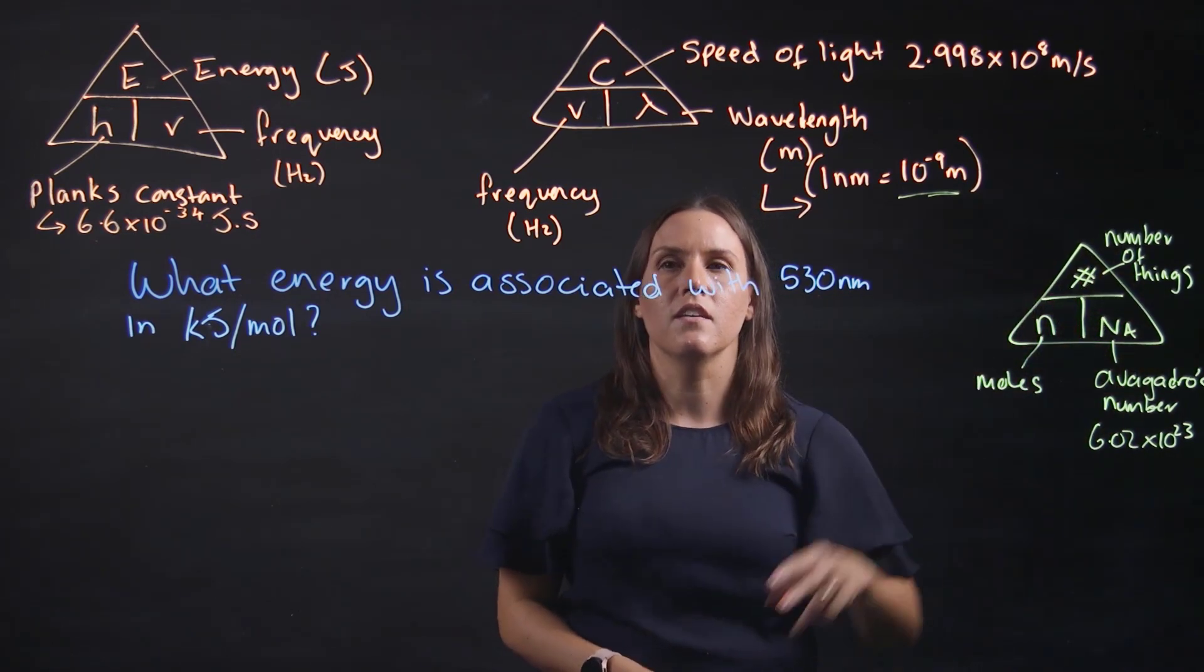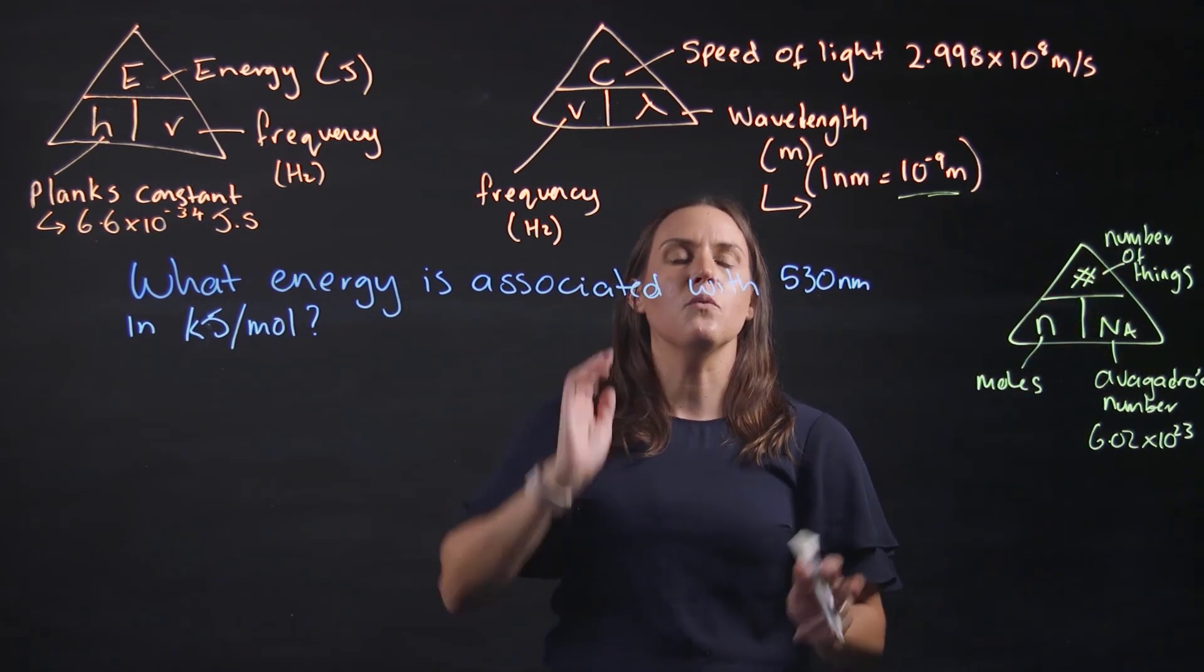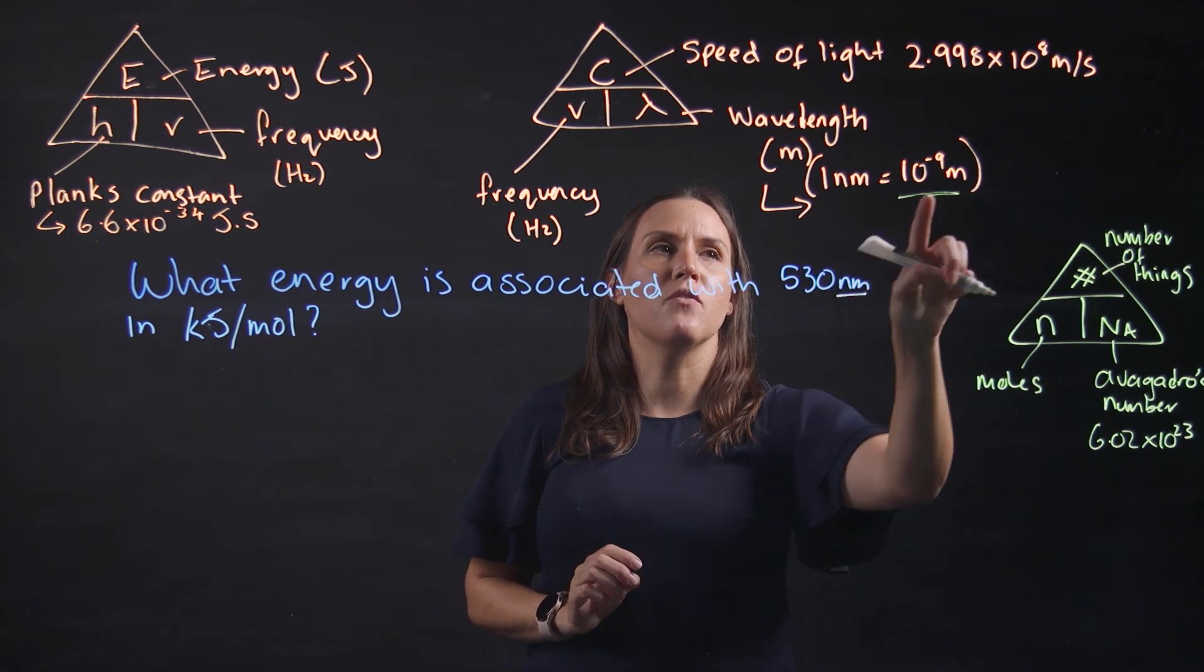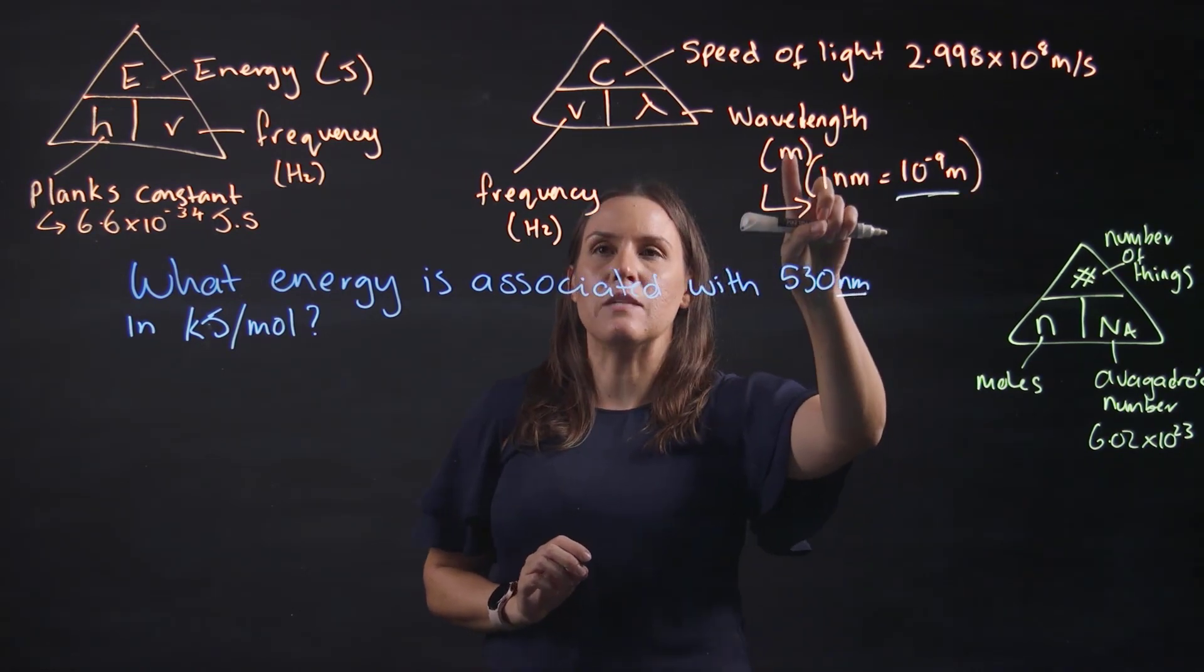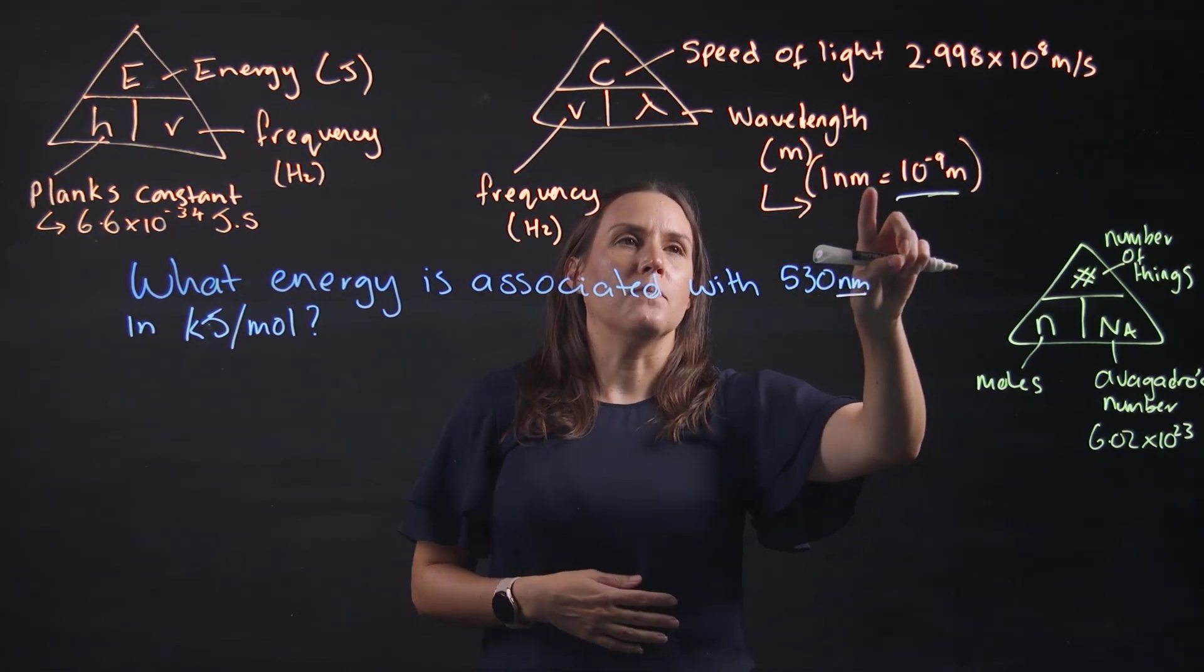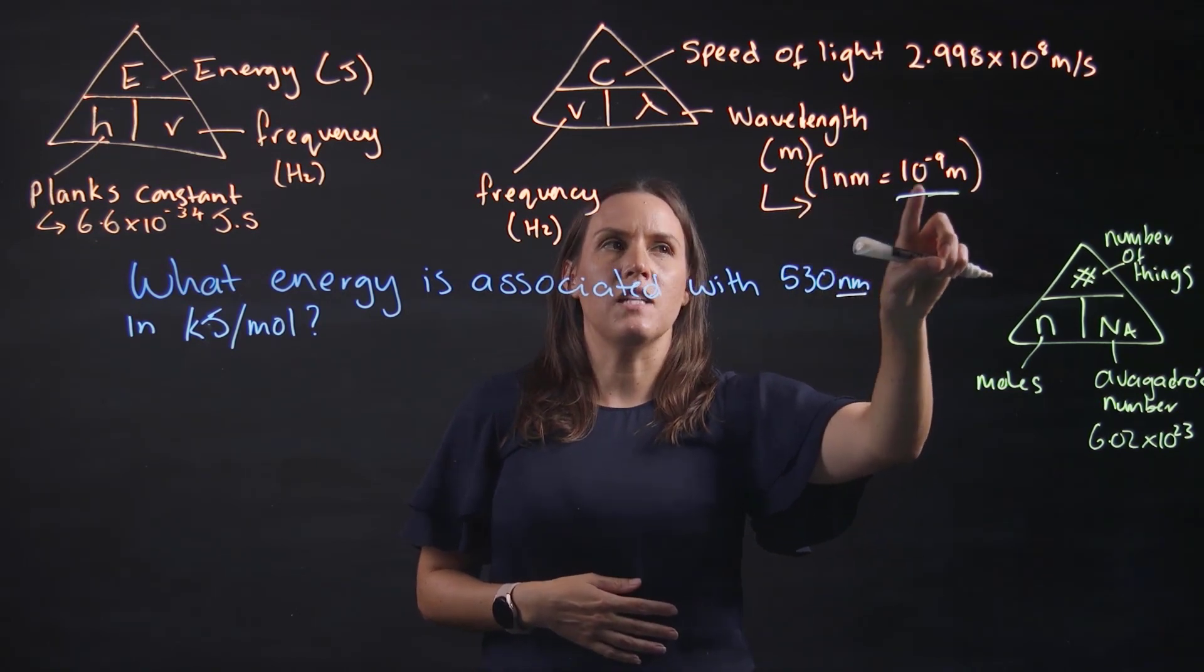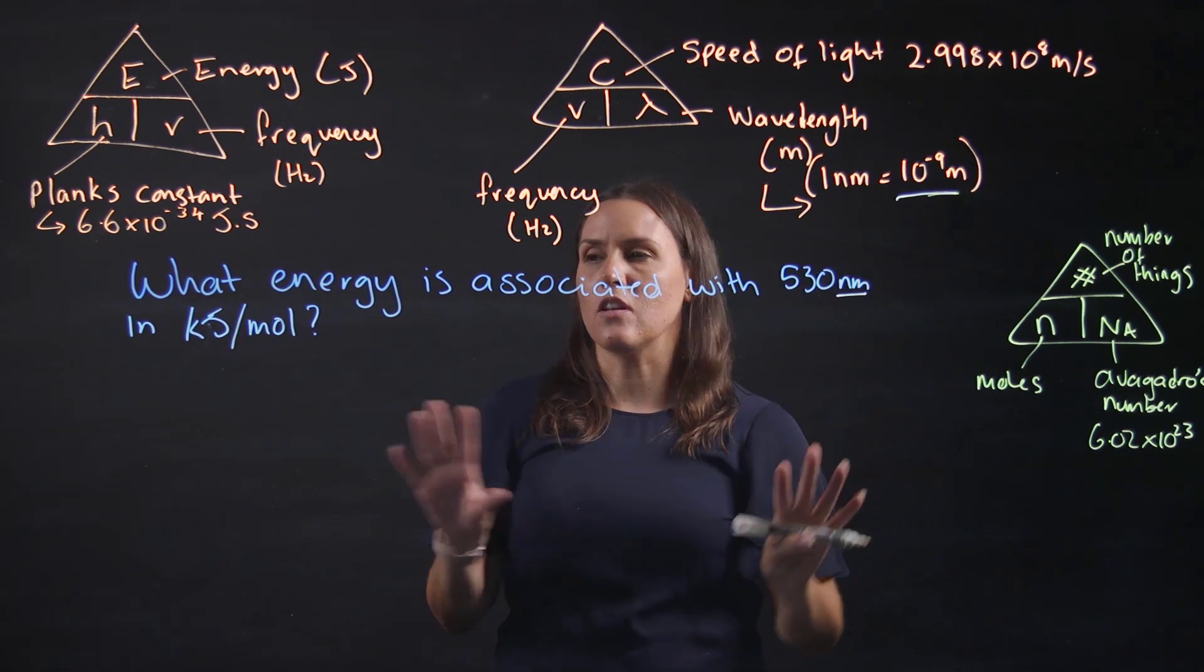Starting with nanometers, we need to convert to meters for this equation because wavelength is in meters. 1 nanometer equals 10 to the minus 9 meters. So let's get started.